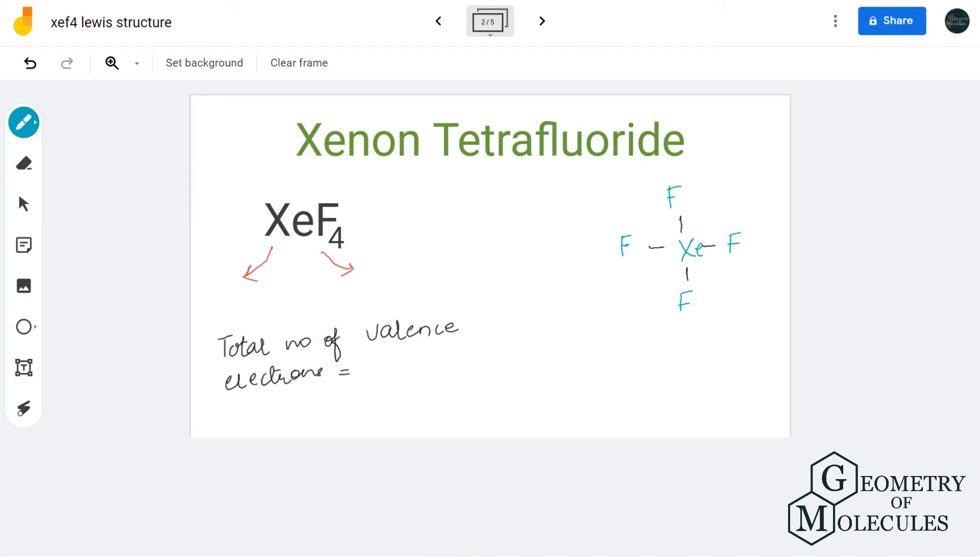for both xenon and fluorine. Xenon has 8 valence electrons in its outer shell, whereas fluorine has 7 valence electrons. As there are 4 fluorine atoms, we'll multiply this number by 4, giving us 28 valence electrons. Adding both these numbers, we will get 36 valence electrons for xenon tetrafluoride.